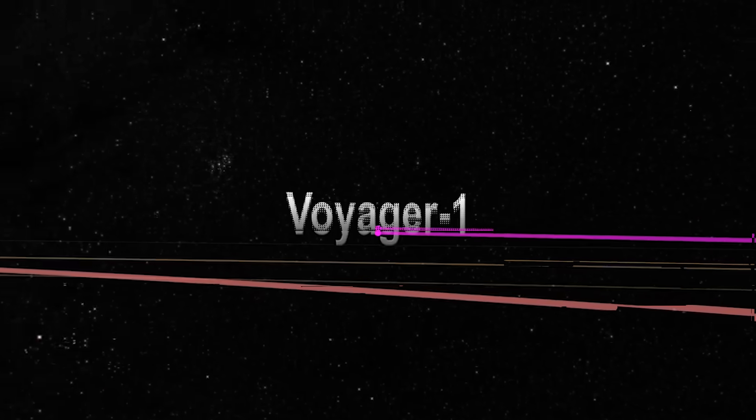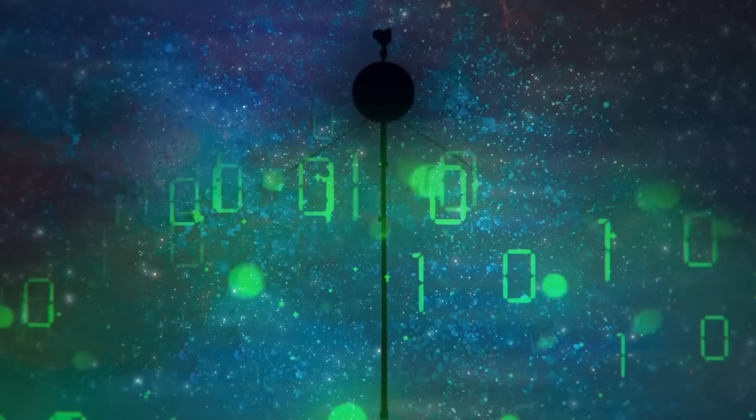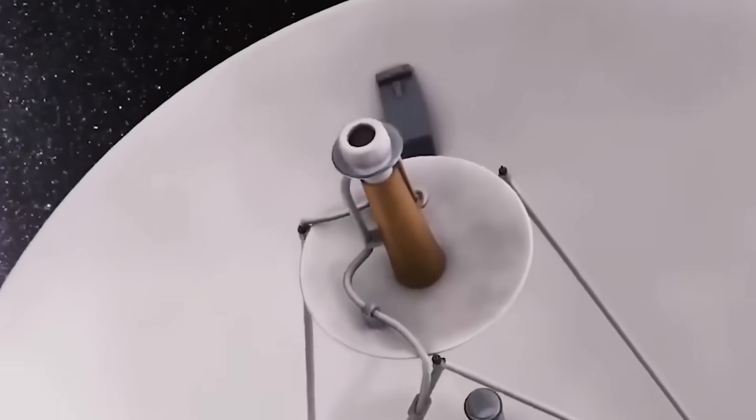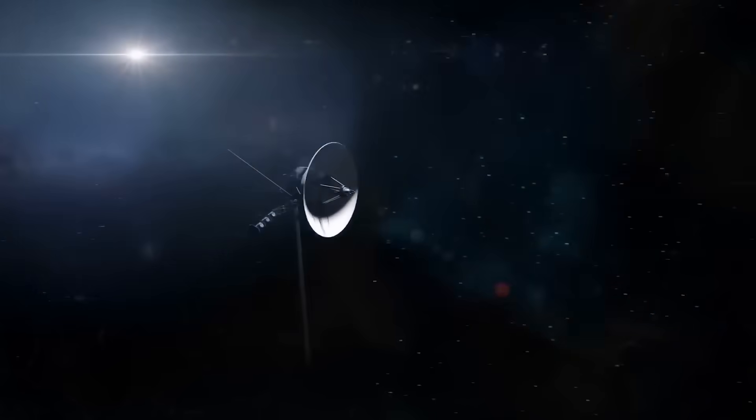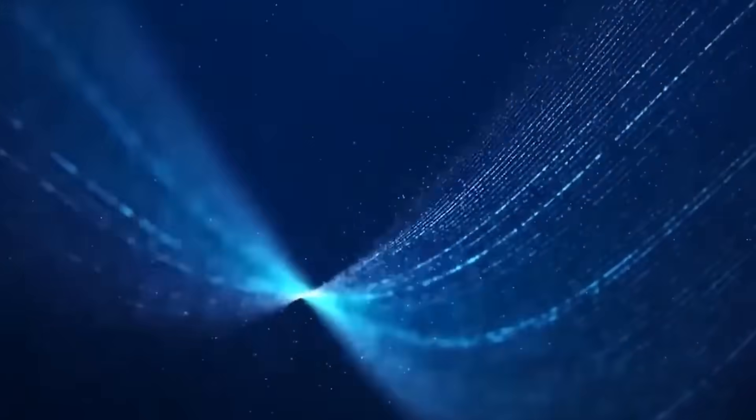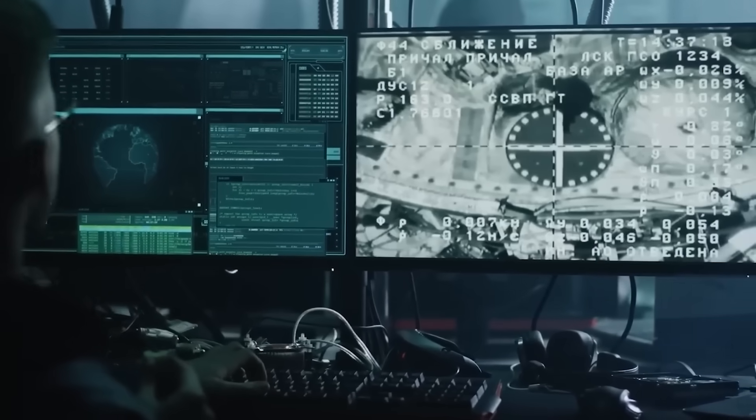Out of the dark, Voyager 1 spoke again. But it wasn't a routine data ping or telemetry packet. It wasn't a glitch or a system check. It was something completely unexpected, a transmission of unknown origin carrying patterns and sequences that didn't match any known system protocol or telemetry stream ever designed by NASA. The signal wasn't just garbled static, it was intentional, ordered, and unlike anything scientists had received before from the probe.